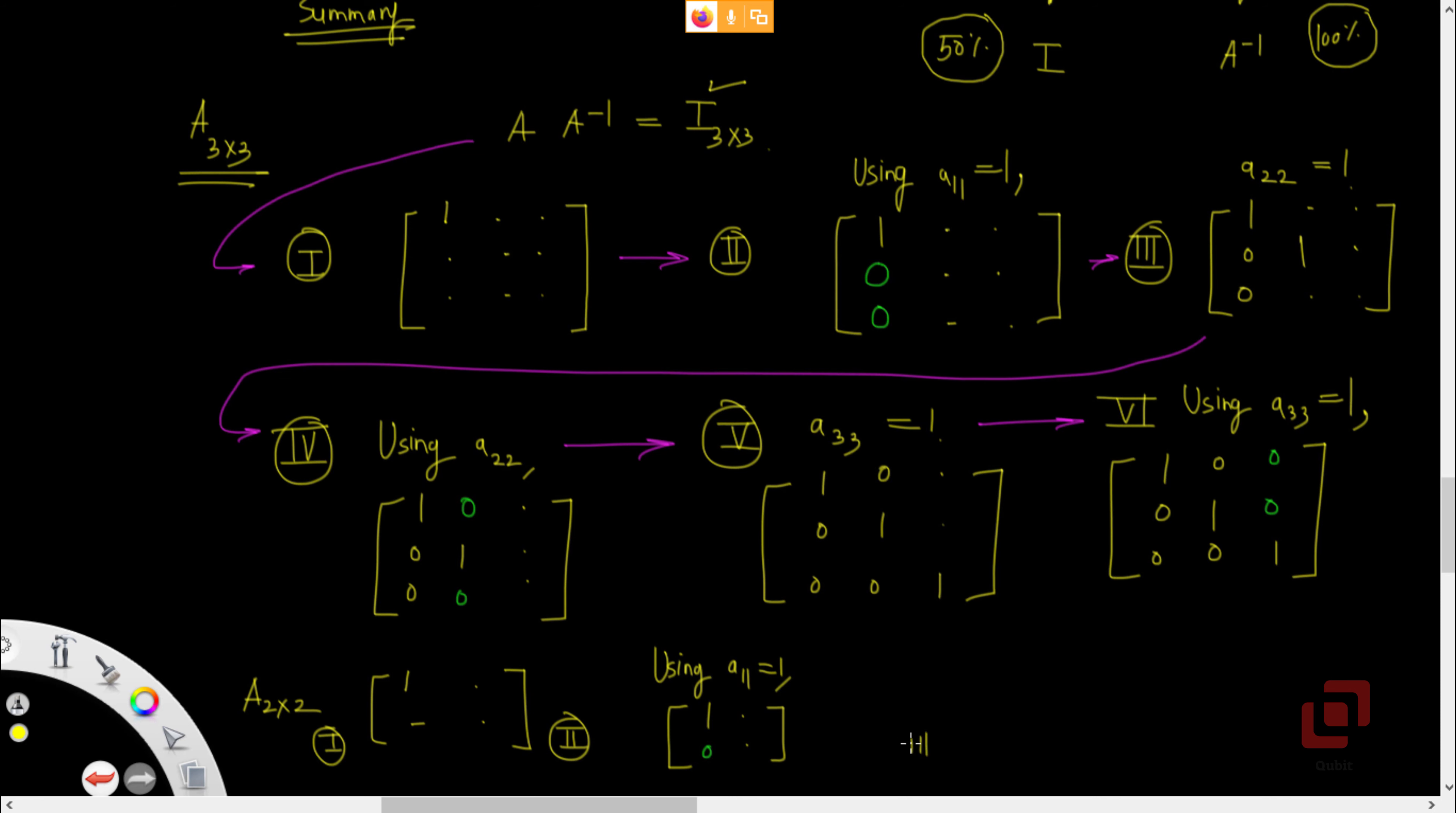Step 3. What do we do? You should basically stress the identity matrix column-wise. Okay?